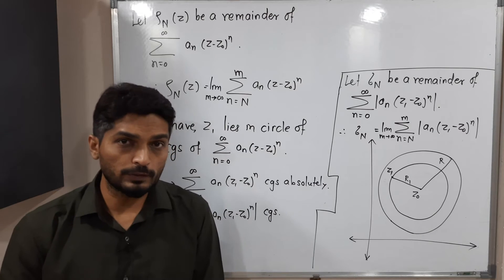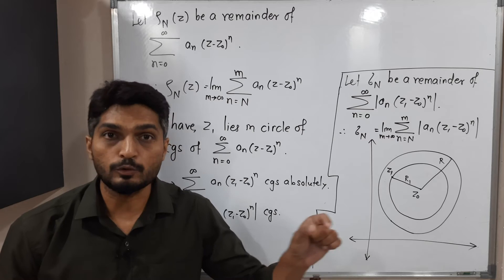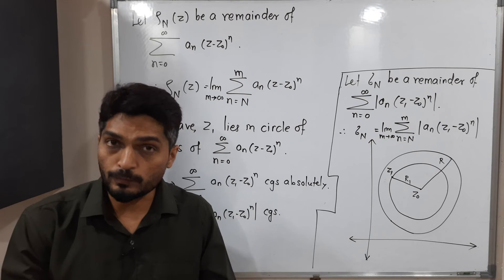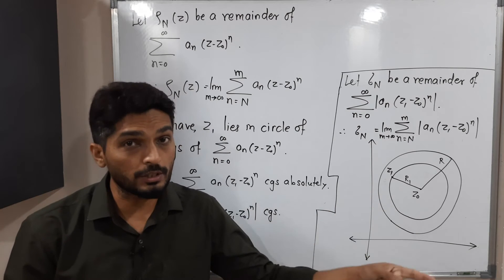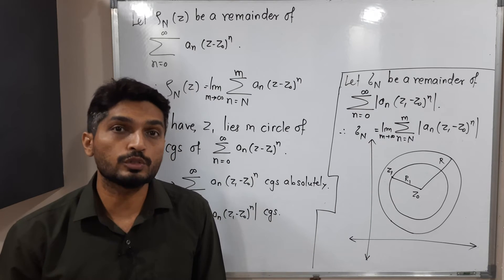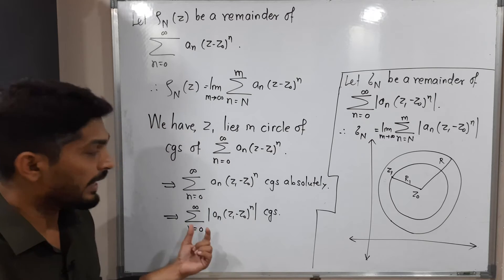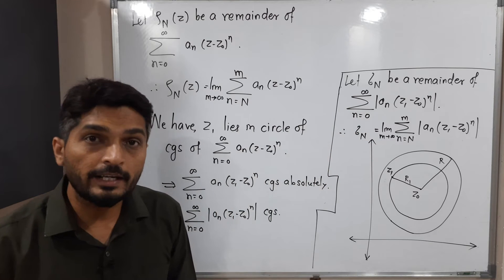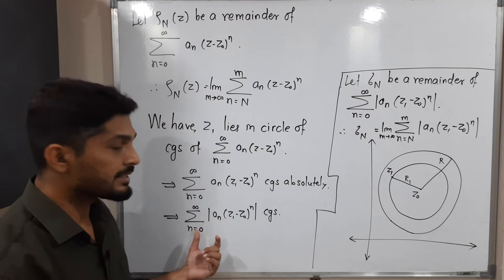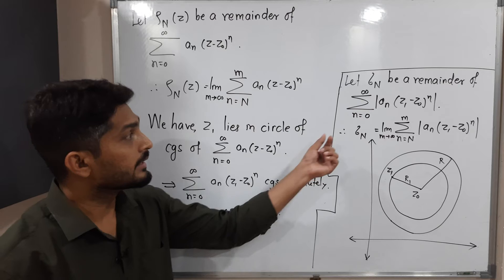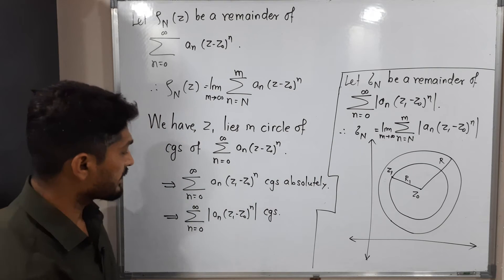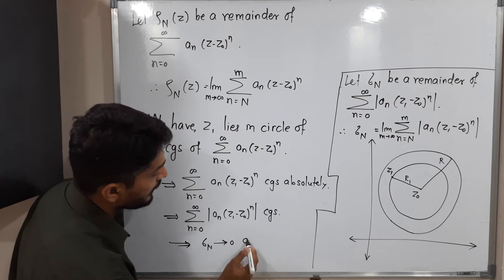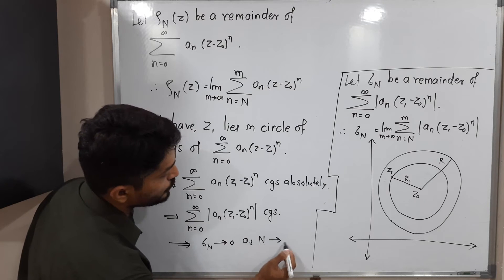If the series is convergent, then its remainder tends to 0 — this is a very important result. If you have any power series which is convergent, its remainder tends to 0, and conversely. Here we have this series convergent with remainder σₙ already defined, so we can say σₙ tends to 0 as n tends to infinity.